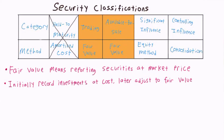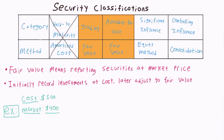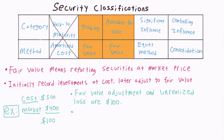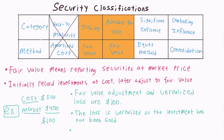For example, if I purchased an investment that required fair value reporting for $500 and the market value of the investment fell to $400, I would need to adjust my accounting records for this investment down by $100 to match the market value. We would call this a $100 fair value adjustment. I would also have to report an unrealized loss on this investment for $100. We use the term unrealized loss here to refer to the fact that the investment has not yet been sold.